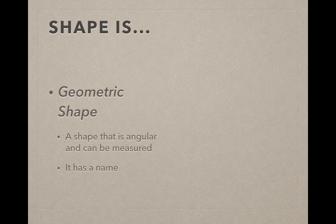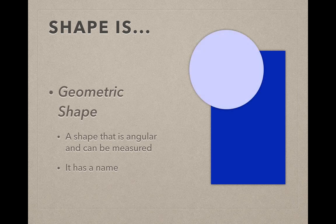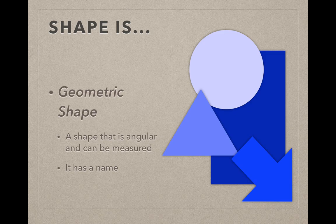We have two types of shape that we're going to talk about. The first is geometric. These are shapes that are angular and can be measured, or it has a name. Think geometry class, hence the name geometric.